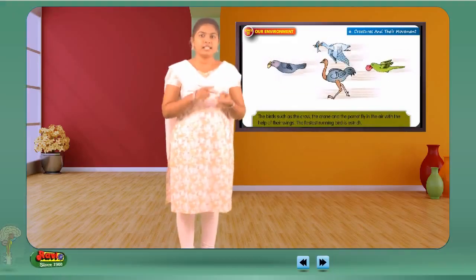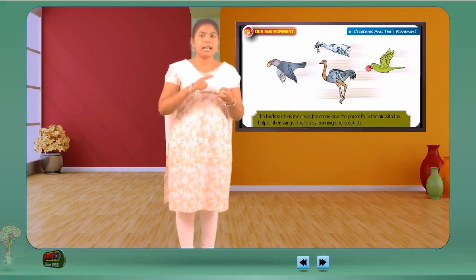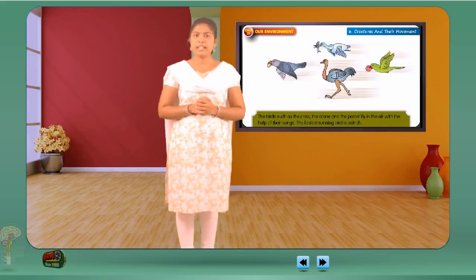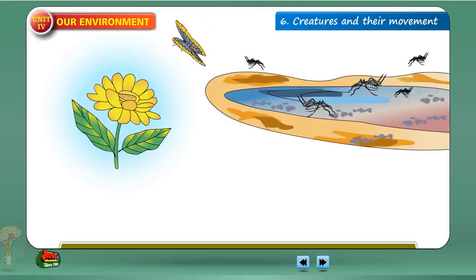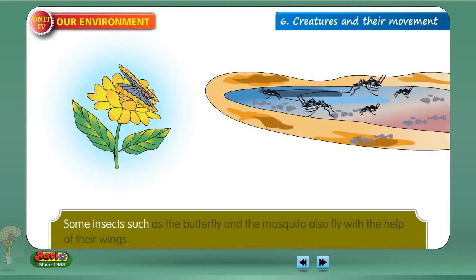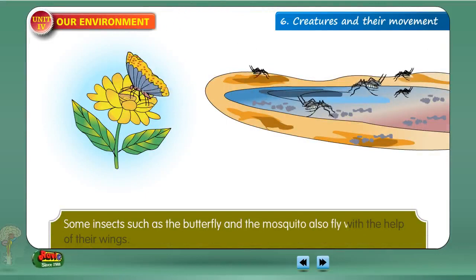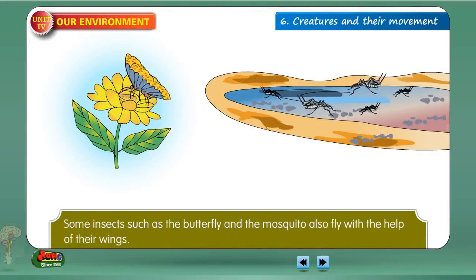The birds such as the crow, the crane and the parrot fly in the air with the help of their wings. The fastest running bird is ostrich. Some insects such as the butterfly and the mosquito also fly with the help of their wings.